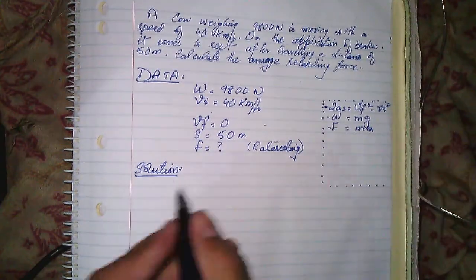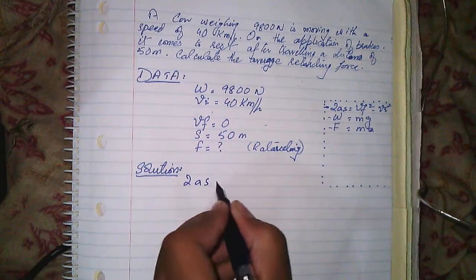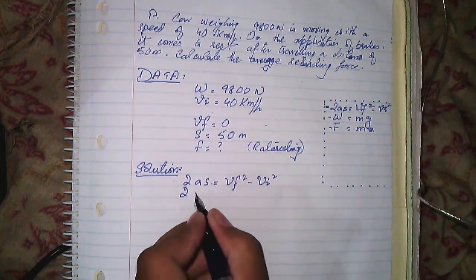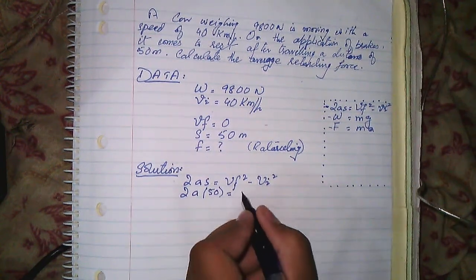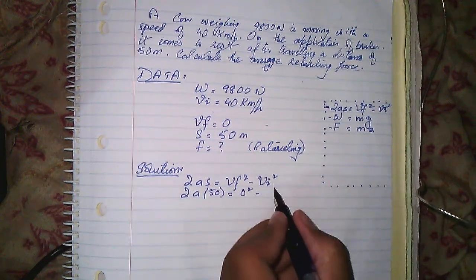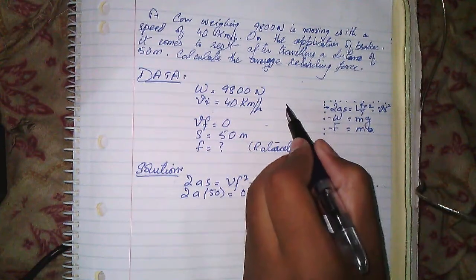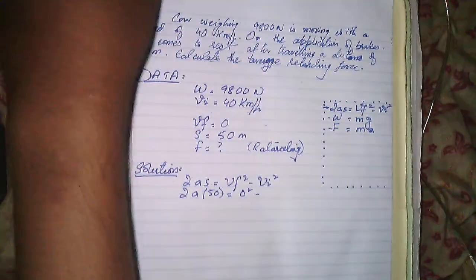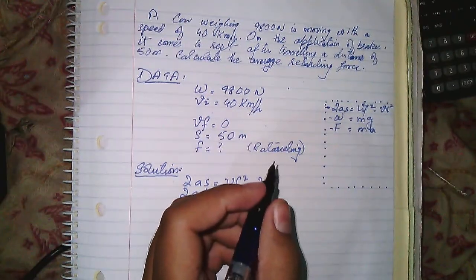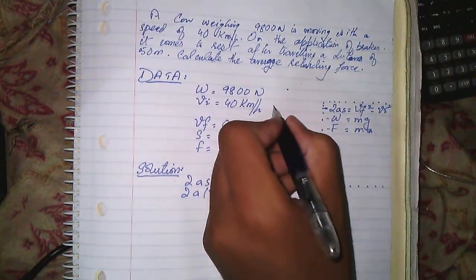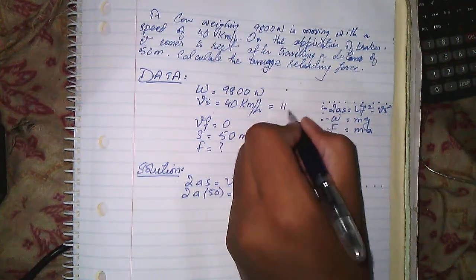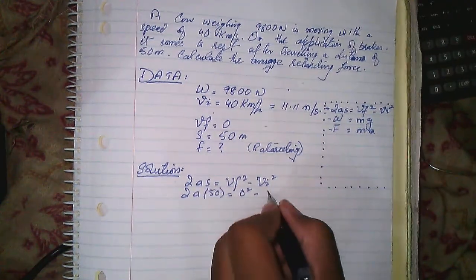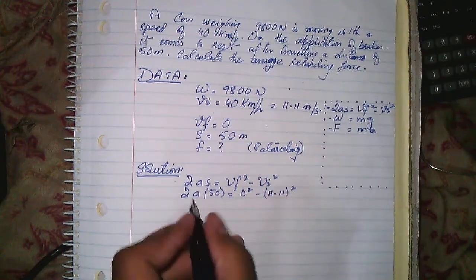We will put values into the formula to find acceleration. The equation is: 2as = Vf² − Vi². So 2 × a × 50 = 0² − (40 km/h)². We convert 40 km/h to meters per second, which gives us 11.11 m/s. So we put in the value: 2 × a × 50 = 0 − (11.11)².